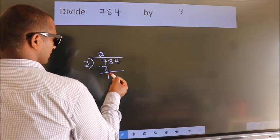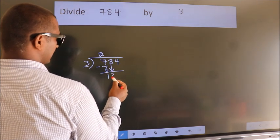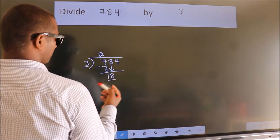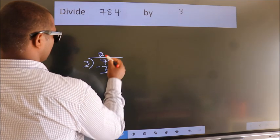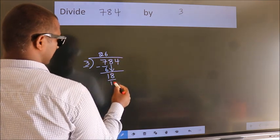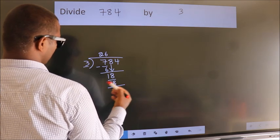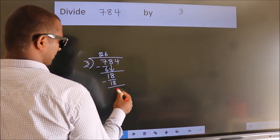After this, bring down the beside number. So, 8 down. So, 18. When do we get 18? In 3 table, 3, 6, 18. Now we subtract. We get 0.